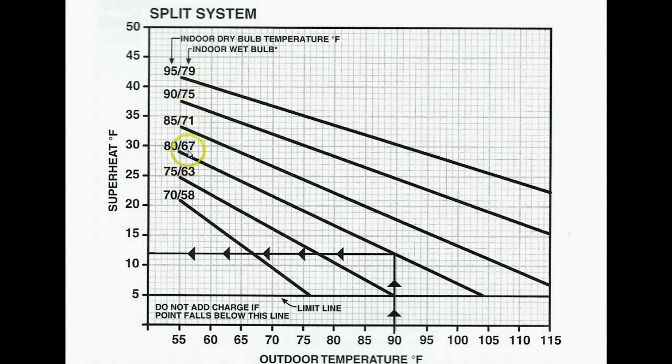You'll notice that there is a wet bulb temperature over on this side. This is if you have a relative humidity of above 70 or below 20% inside the home. You're not going to find that very often. Just run a quick check if you think it might be there, or if you're in Arizona somewhere where the relative humidity is pretty low.